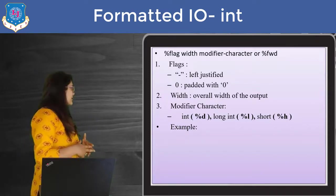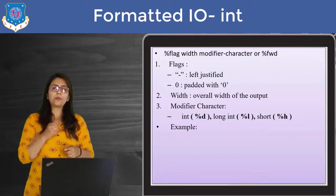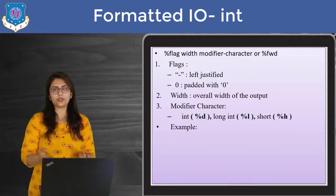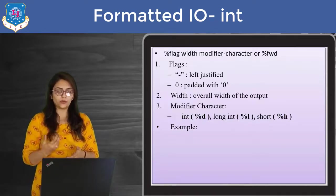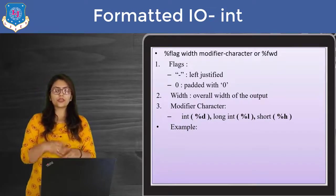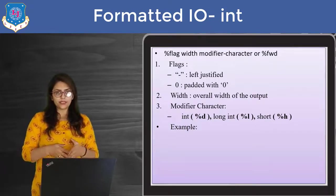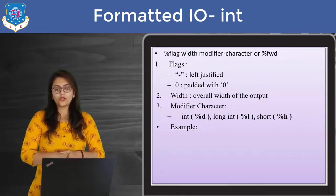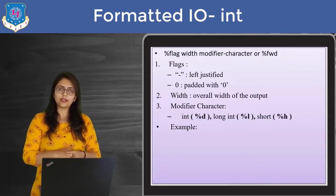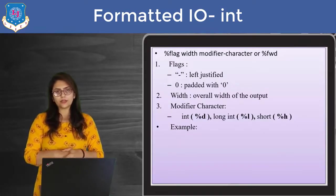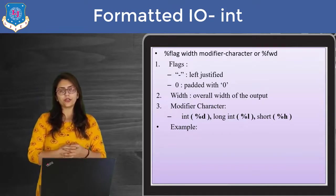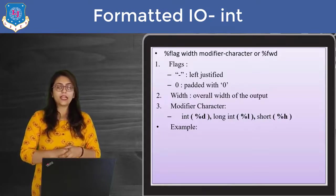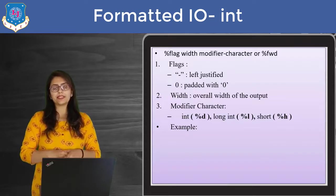The other flag is 0. Sometimes you want to pad your numbers with zeros, like 001234 or 123400. You want to pad the spaces with zeros — at that time you use the 0 flag. Now what exactly is width? Width is the total width of the output. Last is the modifier character: for integer use %d, for long integer use %ld, and for short use %h.